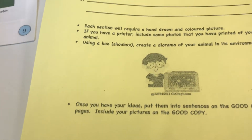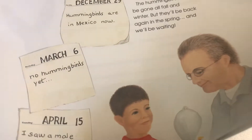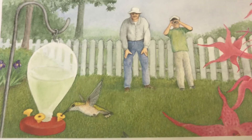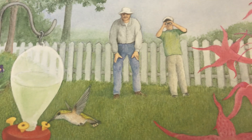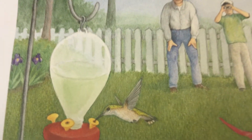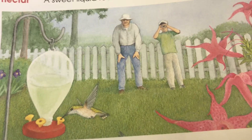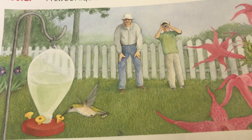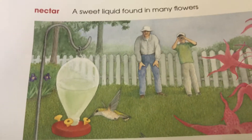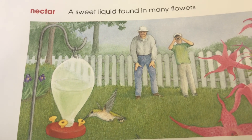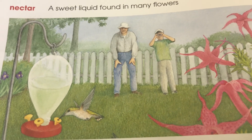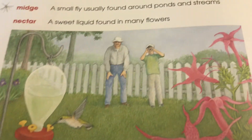If I was creating a diorama for a hummingbird, I'd go through my book and it looks like it enjoys yards with flowers. So I might make a grassy yard with some big flowers, because it likes to suck the nectar. I might even make a little pretend hummingbird feeder in my diorama. I hope this helps.